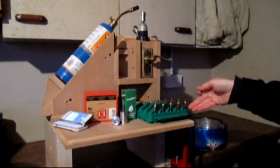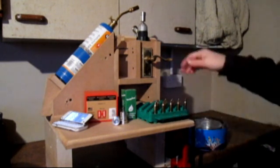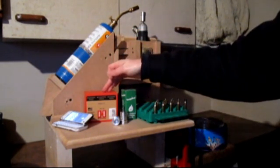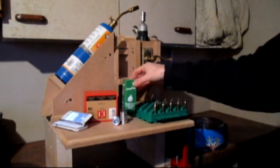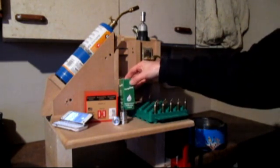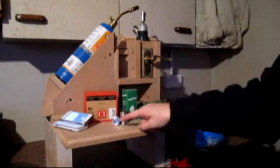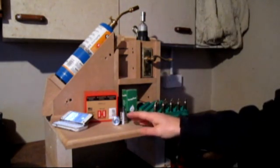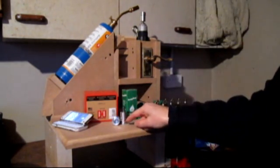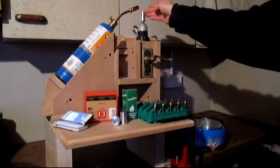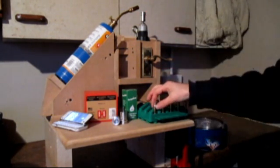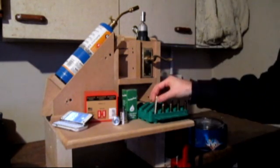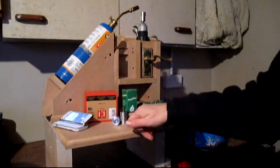Here we have my rifle brass that I will be annealing today and I will be using the Hornady annealing kit which I find very useful. This comes with the Tempilaq temperature indicating liquid and three case holders. Two here and one already attached. These are for different sizes of rifle case. The one I have here attached is for the 6.5x55.